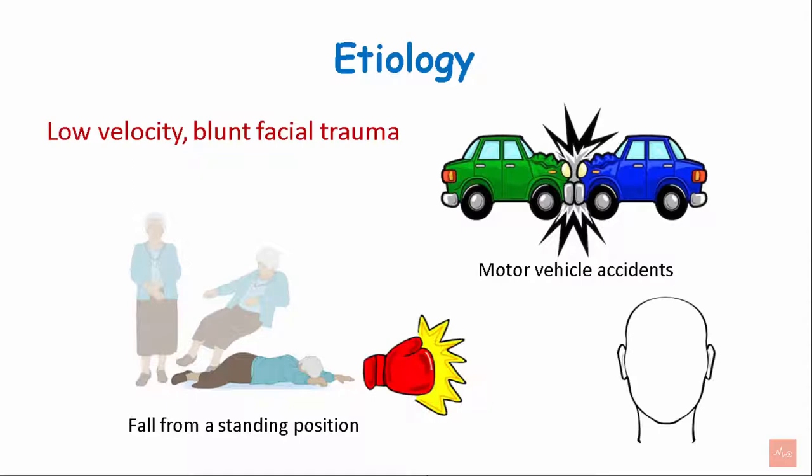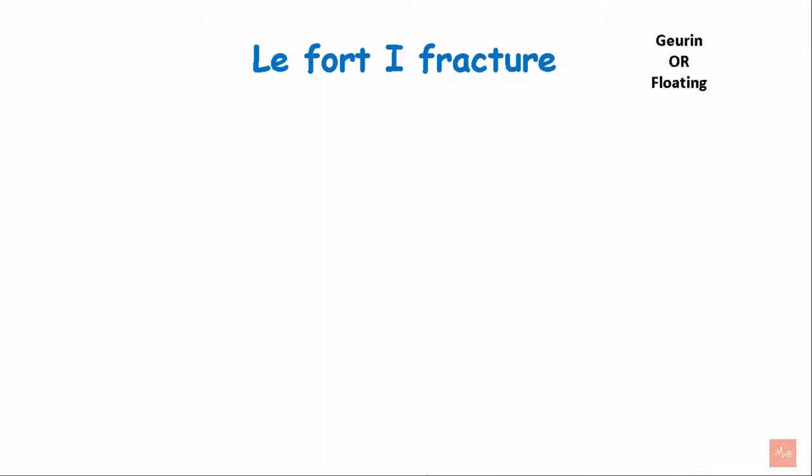The etiology of LeFort 1 fracture is low velocity blunt facial trauma. It can occur due to motor vehicle accidents, fall from a standing position, or physical assault. LeFort 1 fractures are also called Guerin or floating fractures. These are the horizontal fractures of the anterior maxilla.